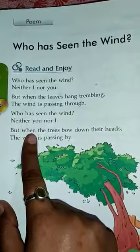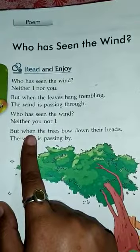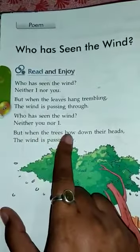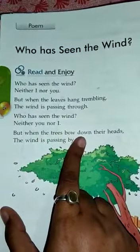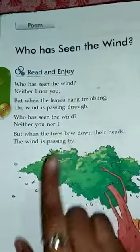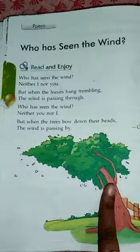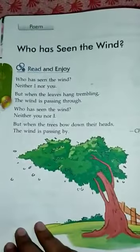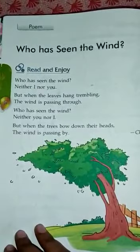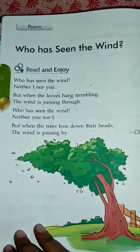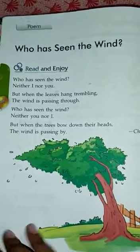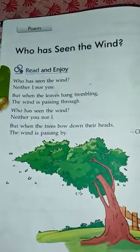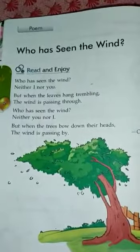But when? Parantu jab the trees bow down — par jab aise trees jhuk jaate hain — the wind is passing by. (But when the trees bow down, the wind is passing by.)